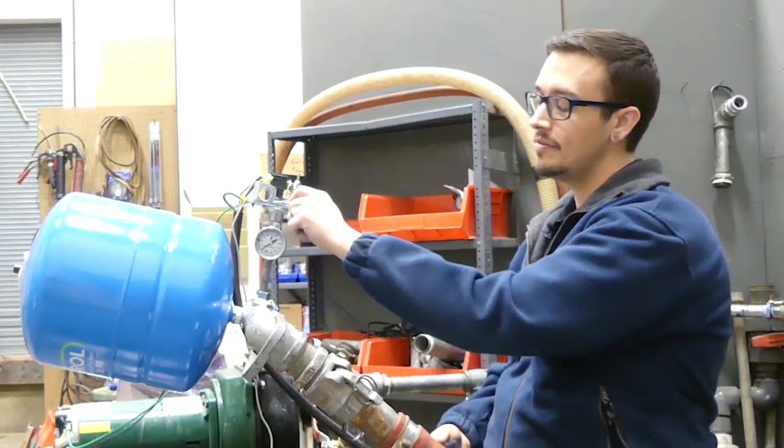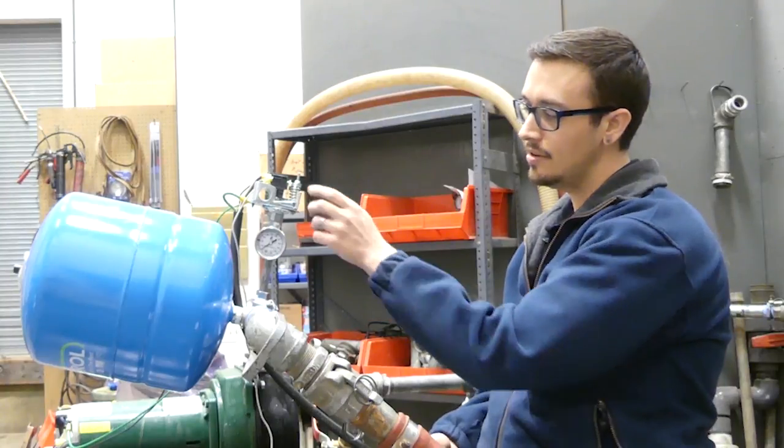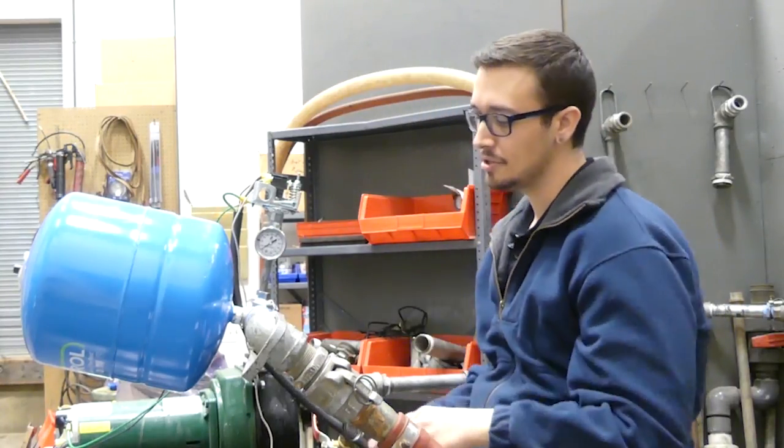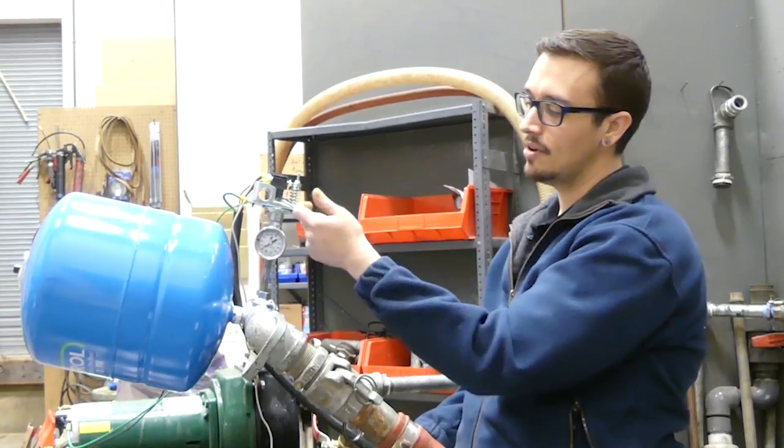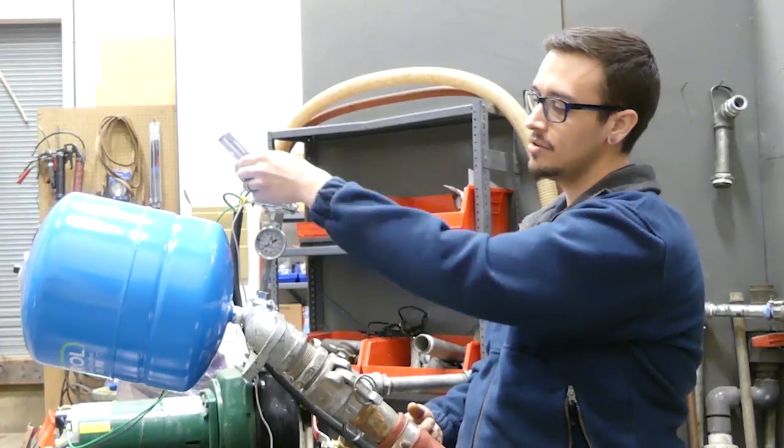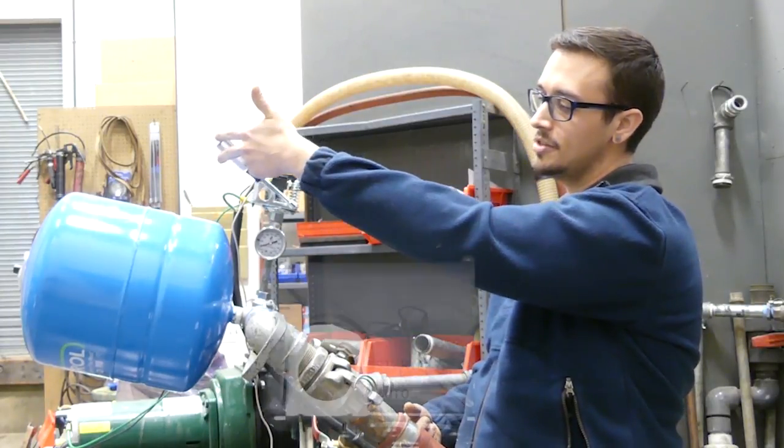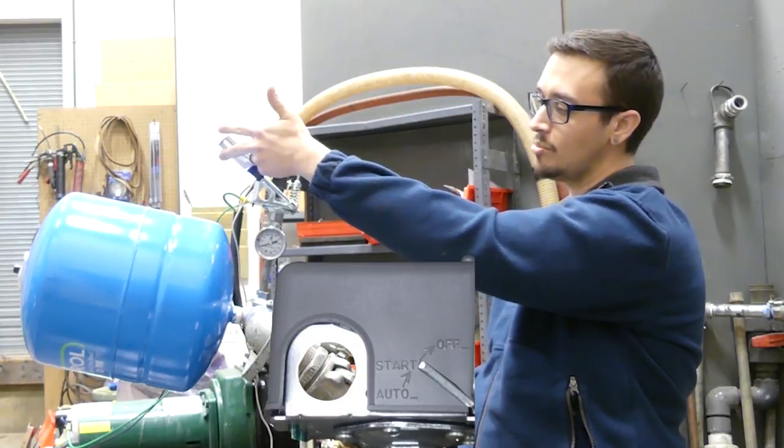We've got the pump reprimed, we're ready to engage this pressure switch again and start getting the system back up and running. When you've got to hold this lever, it can sometimes be a little hard on your fingers, so just using something simple like a nut driver to hold it in place gives you a little leverage and makes it a whole lot easier. Let's see if we can get this thing primed back up.